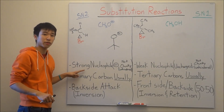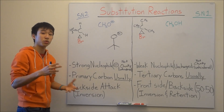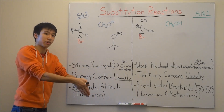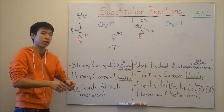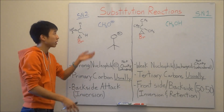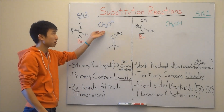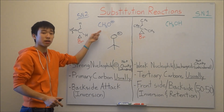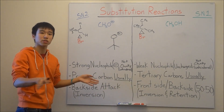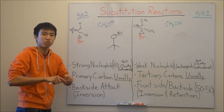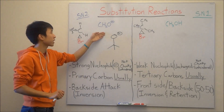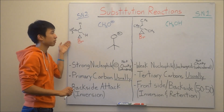You can kind of compare a strong nucleophile to a nuclear missile, because when your nuclear missile hits its target, it ends up releasing a lot of radiation. And methoxide here has the excess of electrons that it wants to radiate or give away and form a bond, and that's exactly what it does when it attacks the substrate over here.